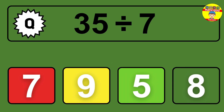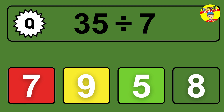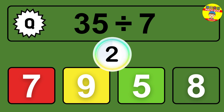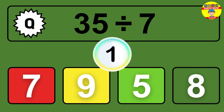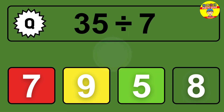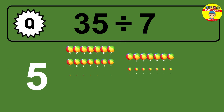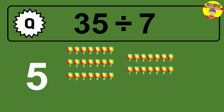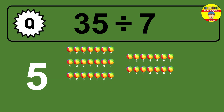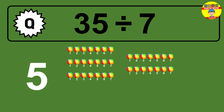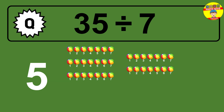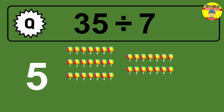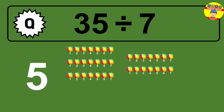35 divided by 7 — time to think. Let's go to the solution. Divide the number 35 by 7. Each group contains 7 units, so dividing 35 by 7 results in 5 equal groups. Thus, the result is 35 divided by 7 equals 5.